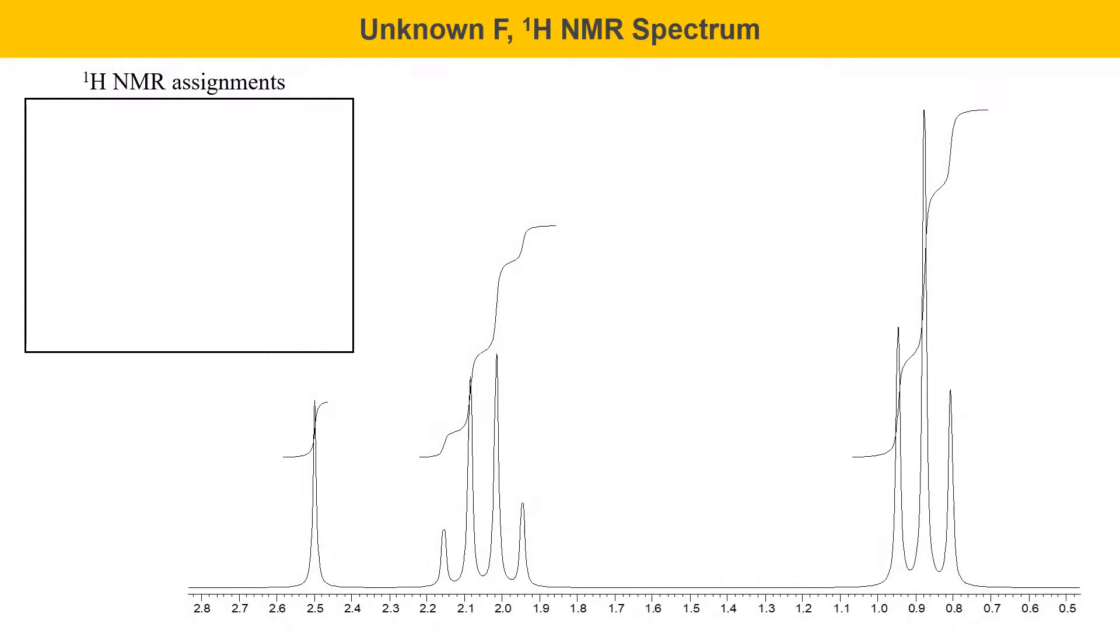Here's the proton NMR spectrum of unknown F. One of the things I want to point out here is this signal at about 2.5 integrates a little low. In other words, when you're trying to develop your ratios of protons, this one will come out a little lower than it should. That's something that happens sometimes. Experimental integrations in NMR peaks are not perfect. And sometimes some peaks end up integrating a little lower than they ought to. So just be aware of that.